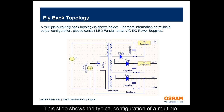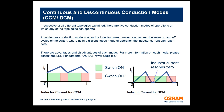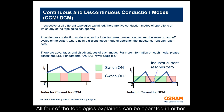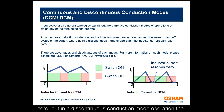This slide shows the typical configuration of a multiple output flyback topology. For more information on multiple output configuration, please consult the LED Fundamental AC-DC Power Supplies. All four topologies can be operated in either continuous conduction mode or discontinuous conduction mode, depending on the current through the inductor. In continuous conduction mode, inductor current never reaches zero, whereas in discontinuous conduction mode, the inductor current does reach zero.